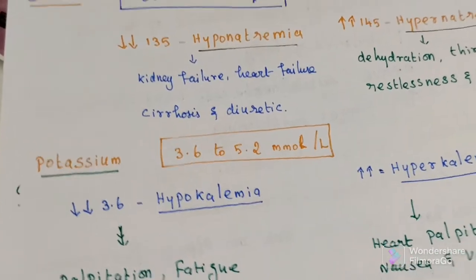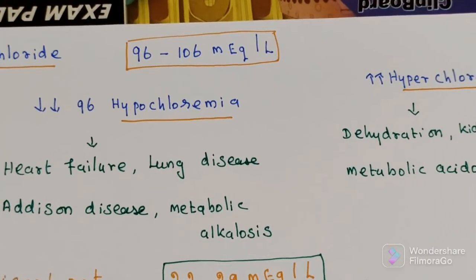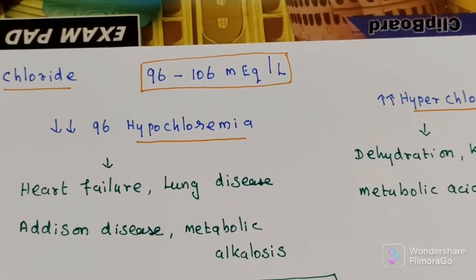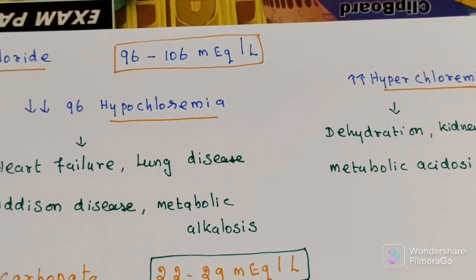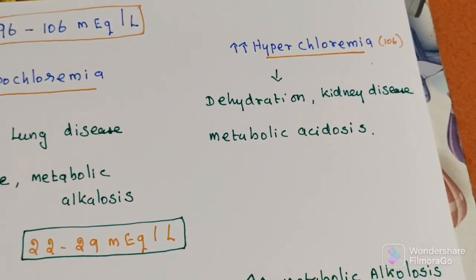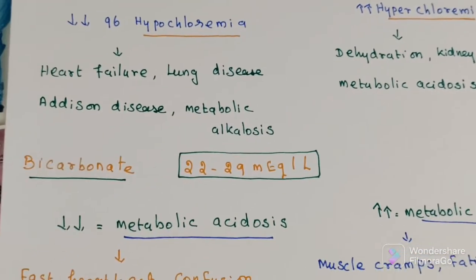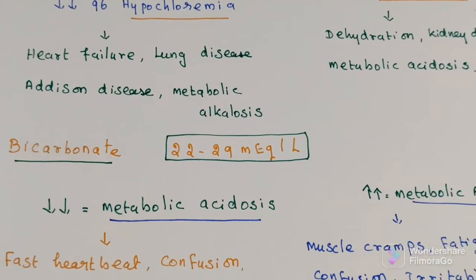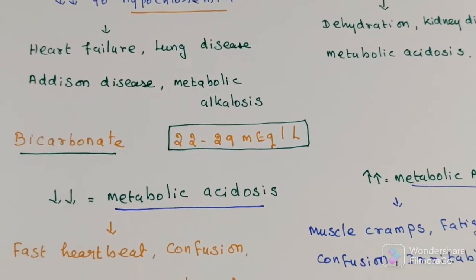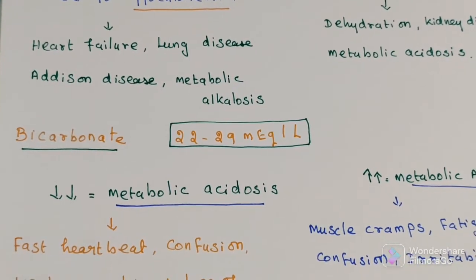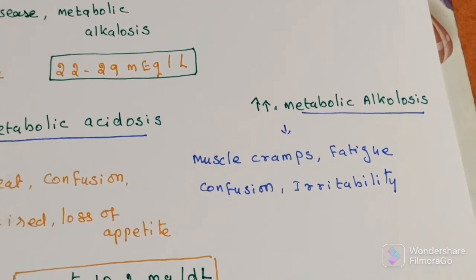The chloride level has a normal range of 96 to 106 milliequivalents per liter. A decreased condition is called hypochloremia and an increased condition is called hyperchloremia. Next, the bicarbonate range is 22 to 29 milliequivalents per liter. A decreased condition is called metabolic acidosis and an increased condition is called metabolic alkalosis.